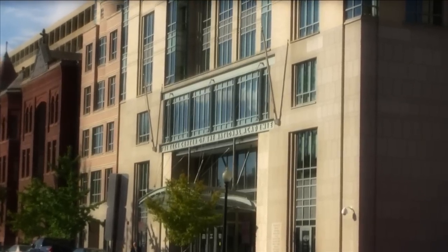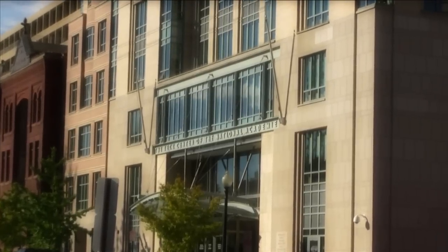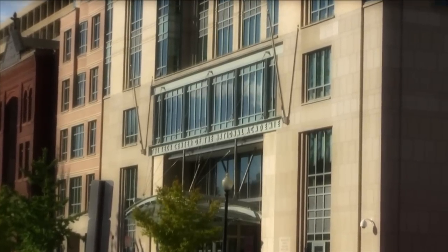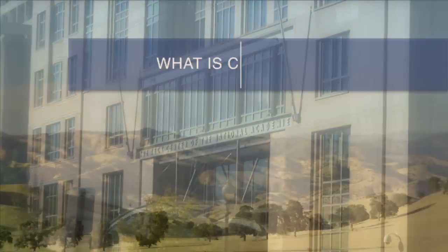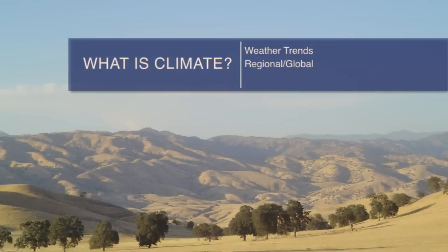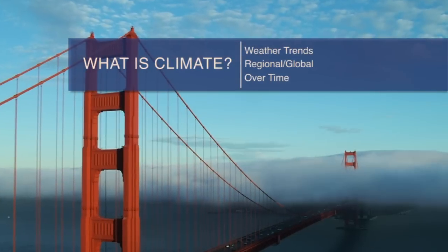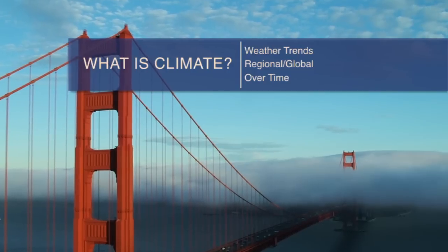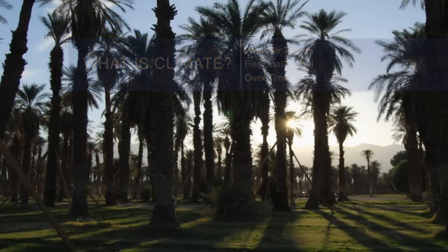The National Academy of Sciences has produced this video to help summarize what is known about climate change. Climate is commonly thought of as the average weather conditions at a given location or region over time. People understand climate in many familiar ways.